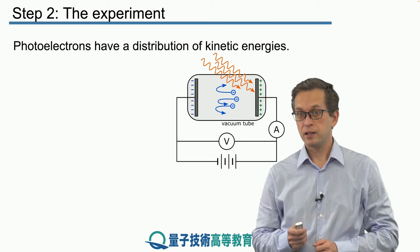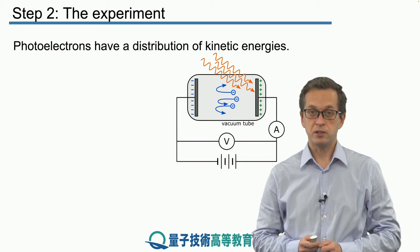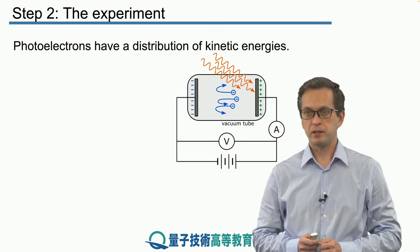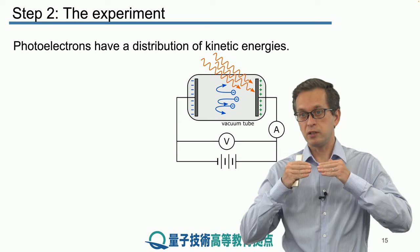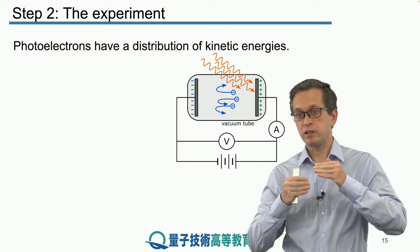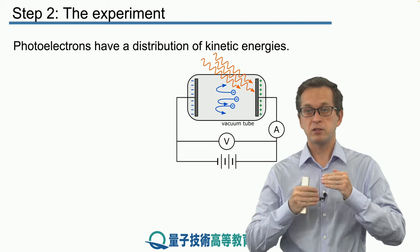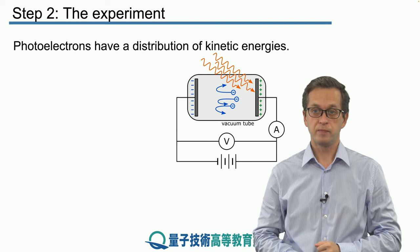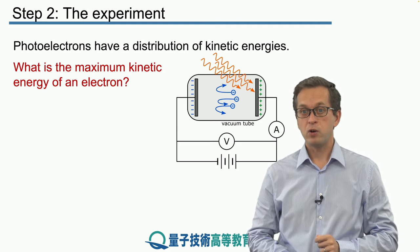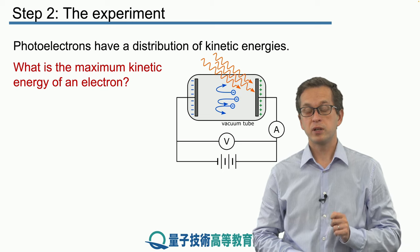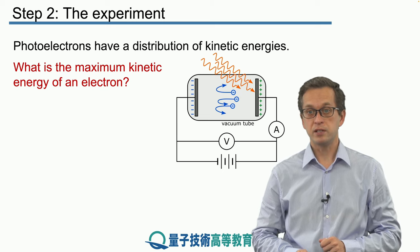Hertz noted that the photoelectrons have a distribution of kinetic energies. And this is also expected, because sometimes the electrons are ejected from the surface, sometimes they are ejected from inside the surface, so they need to travel a little bit more. And he found a way of how to measure the maximum kinetic energy of these electrons.